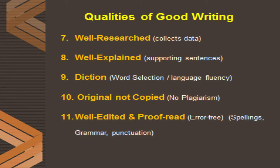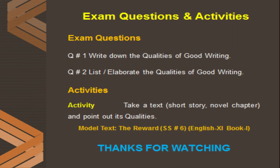Now let's deal with exam questions and activities. Question number one: write down the qualities of good writing. Question number two: list down or elaborate the qualities of good writing. For the activity, take a text — a short story or a novel chapter — and point out its qualities. For example, I recommend the short story number six from the First Year English Punjab Textbook Board, Book One: 'The Reward.' Take that short story and point out its traits and features.